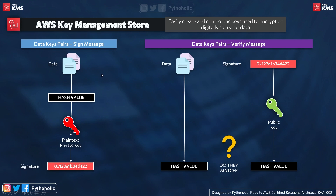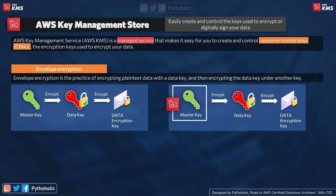To recap: when signing using the data key pair, you have the data, create the message digest using a hash function, and use the private key to create the signature. When verifying, you use the public key to decrypt the signature and match the message digest hash value — both hash values must match. Now, another important concept is envelope encryption. We saw how we can encrypt data, but what about the keys? They should also be protected. We can encrypt the plain text data key, and then encrypt the data key under another key.